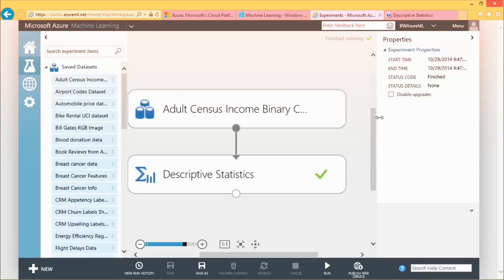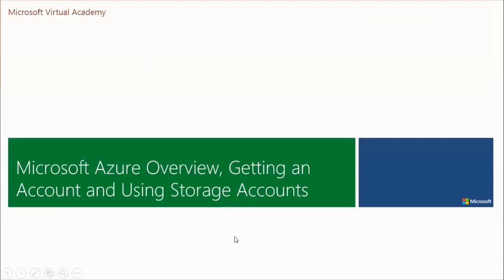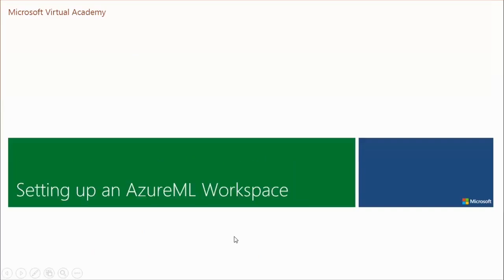You'll notice the small clock on the descriptive statistics. It ran quickly — you can see the green checkbox. Now I can right-click and pick 'visualize.' Look at what I get: the count of feature, unique value, missing, min, max, mean, standard deviation, sample variance — very interesting descriptive statistics. If I click on any of these, I actually get a graph. The missing value count is very useful because one of the things we'll have to do is clean up data if we want to analyze it.